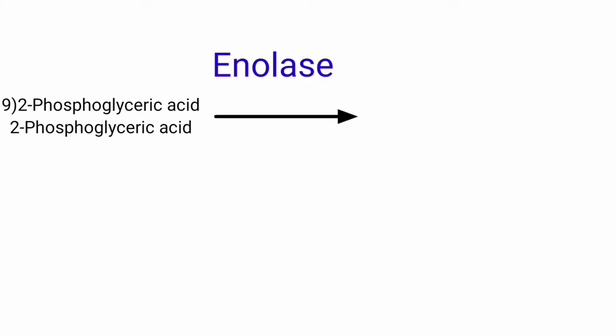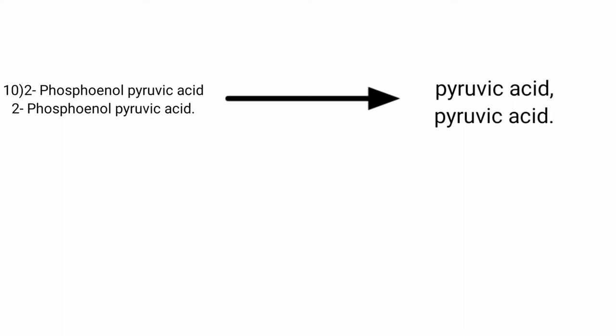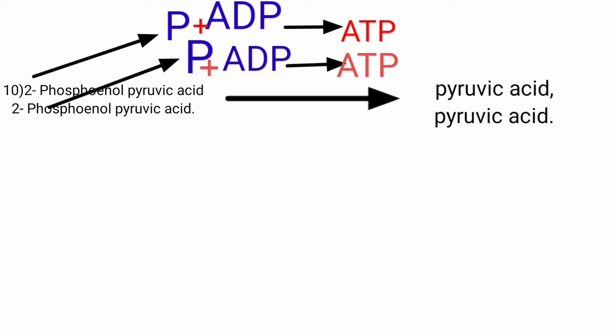In step 9, the enzyme enolase removes 2 water molecules from 2 molecules of 2-phosphoglyceric acid, converting them to phosphoenolpyruvic acid (PEP). In step 10, 2 molecules of phosphoenolpyruvic acid donate their phosphate groups to 2 ADP, forming 2 ATP and 2 molecules of pyruvic acid.